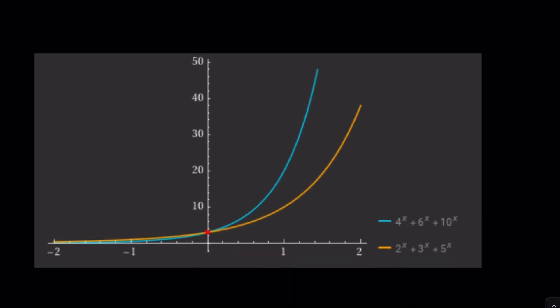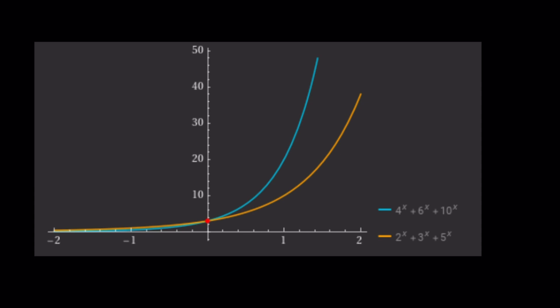So, let's go ahead and take a look at the graph of, ta-da, these two functions. Yes, they do intersect at x equals 0. Notice that one of them is going to grow faster and faster and faster. So, they will never intersect again.